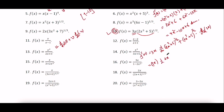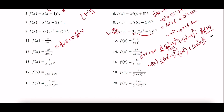This equals 3x into one half times (2x cubed plus 5) to the power (one half minus 1) into the derivative of (2x cubed plus 5), which is 6x squared. Plus (2x cubed plus 5) to the power one half into the derivative of 3x, which is 3.